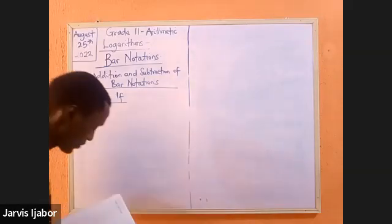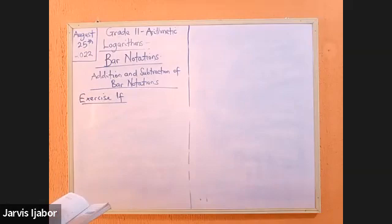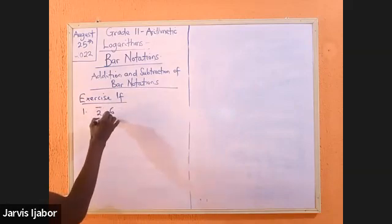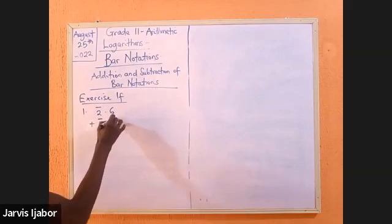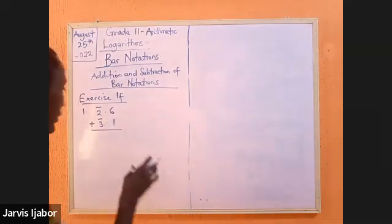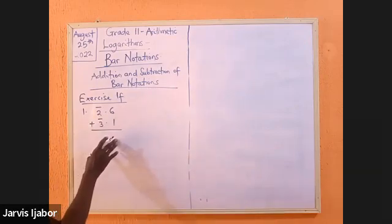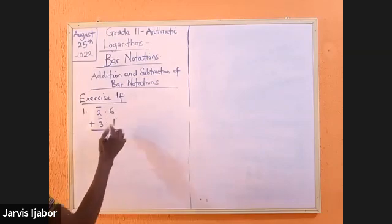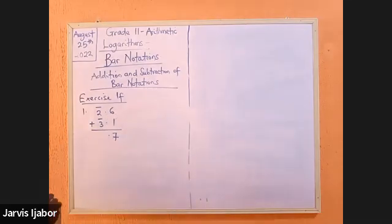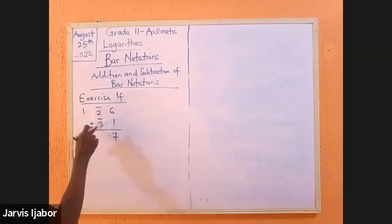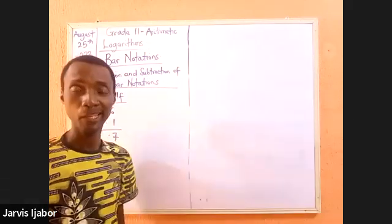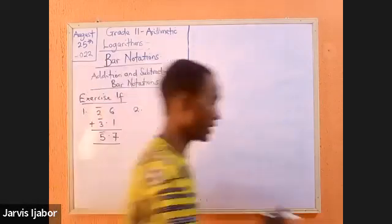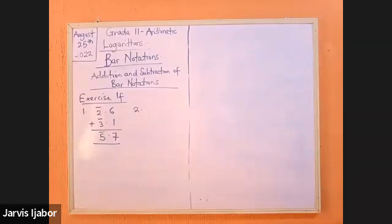I'm just going to pick a few of the questions there. I'll take those of additions first. Let's say I have bar 2.6 plus bar 3.1. The trick here is to treat them independently. From your knowledge of primary school, you add your unit size first. So, 6 plus 1 will give me 7. There's no carry. Then, bar 2 plus bar 3 means negative 2 plus negative 3, which will give me negative 5. So you're already conversing with addition and subtraction in bars.